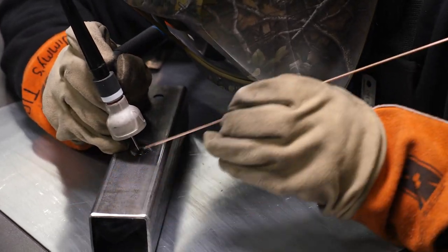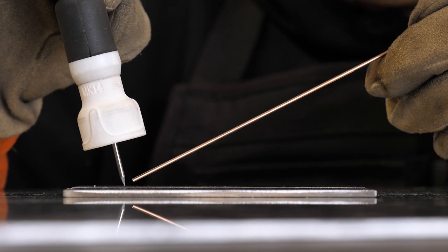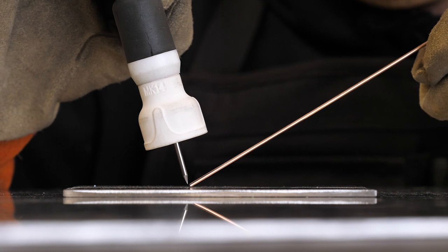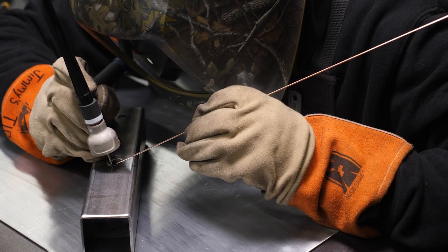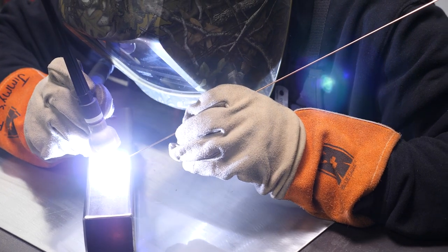The angle of our torch is also important here. We want to tilt the torch so that the tungsten is angled in the direction that we're traveling at approximately a 15 degree angle. This will allow us to introduce the filler rod into the weld pool directly in the stream of inert gas.